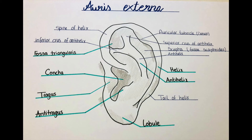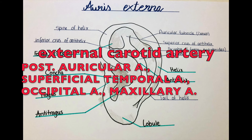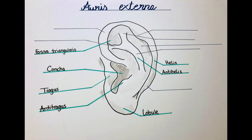Now let's come to the blood supply of the ear. It is in general supplied by branches of the external carotid artery. These branches are the posterior auricular artery, the superficial temporal artery, the occipital artery, and the maxillary artery. The venous drainage is by the veins named the same: the posterior auricular vein, the superficial temporal vein, the occipital vein, and the maxillary vein.